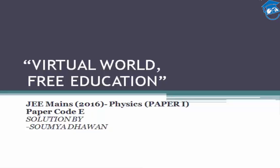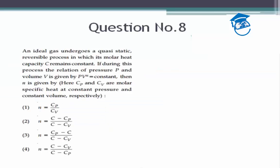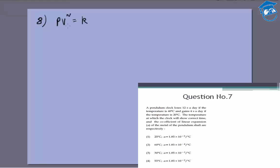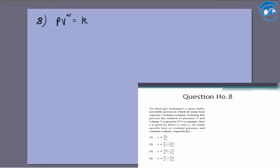Hello everyone and thanks for watching Edupedia World videos. In this video we'll discuss solutions to the 2016 JEE Mains physics question paper. Let's move on to the next question. We are given that an ideal gas undergoes the process PV to the power n equals constant, and we need a relation between the molar heat and n.